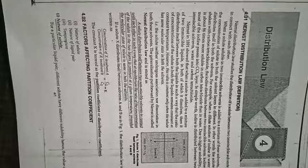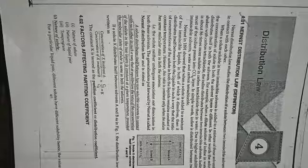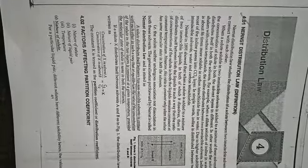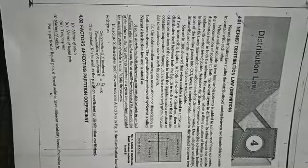In simple words, iodine is distributed between two immiscible solvents — water and carbon tetrachloride. Nernst in 1891 showed that when a solute is added to a mixture of two immiscible liquids in both of which it dissolves, it distributes itself between both the liquids such that the ratio of concentration of solute in both liquids remains constant at constant temperature.